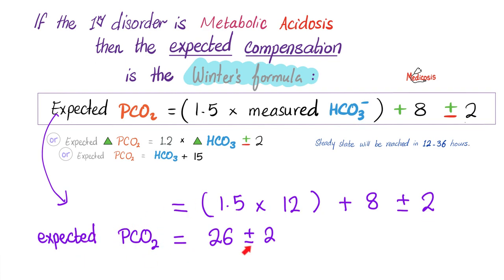If you do the math, the expected carbon dioxide should equal 26 millimeters of mercury plus or minus 2. Was the carbon dioxide 26? No, it was 40. Oh, 40? It was higher than expected. When the carbon dioxide, the acid, is higher than expected, we have another respiratory acidosis.